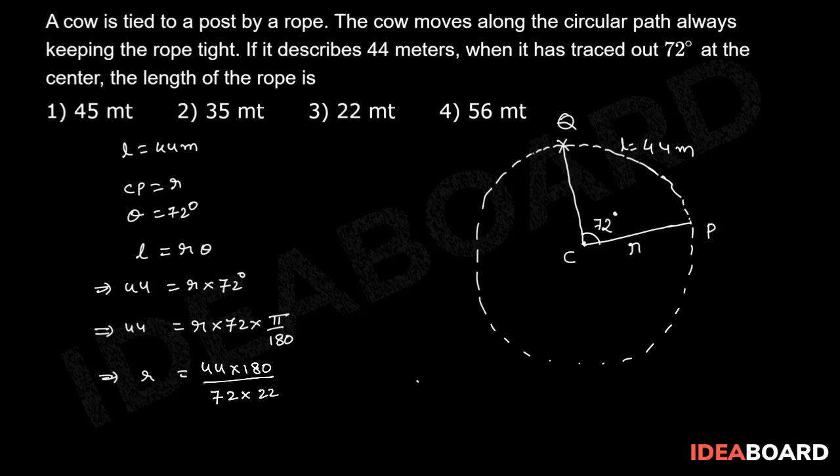Pi value is 22 by 7. Simplifying: 44 times 180 divided by 72 times 22 by 7 equals 35 meters.